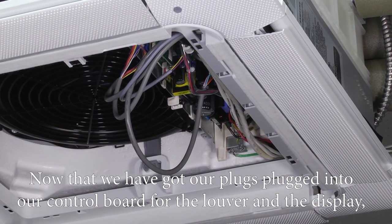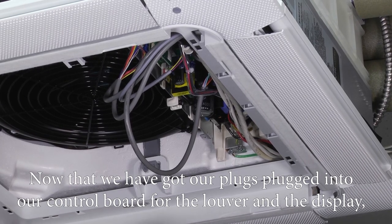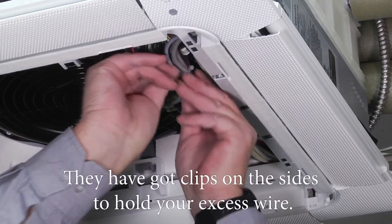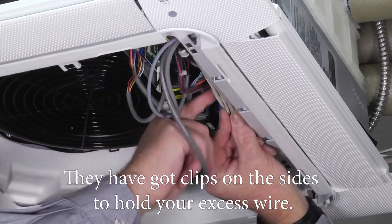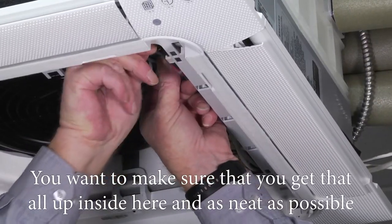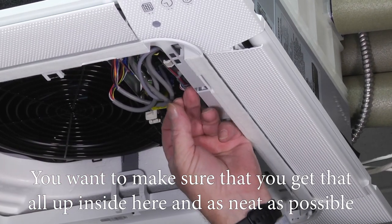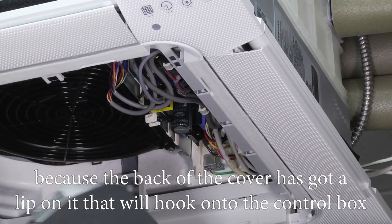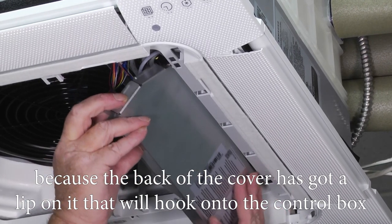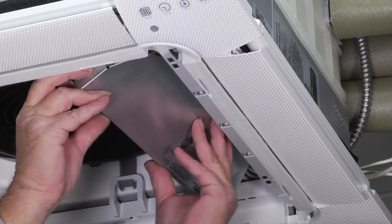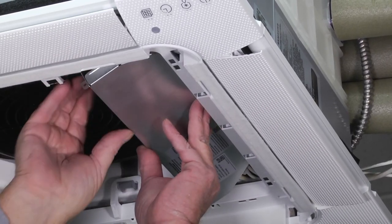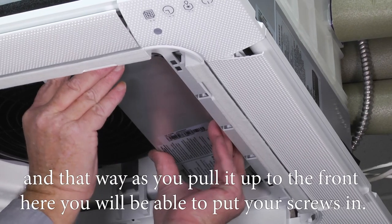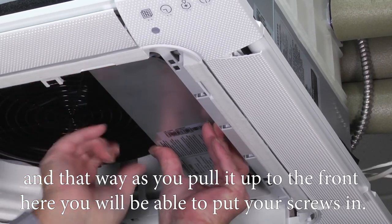Now that we've got our plugs plugged into our control board for the louver and the display, we're going to tuck our wires into here to where they're out of the way. They got clips on the sides to hold your excess wire. You want to make sure you get that all up inside here as neat as possible, because the back of the cover has got a lip on it that will hook on to the control box, and that way as you pull it up to the front here, you'll be able to put your screws in.